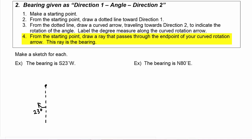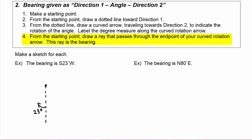Step four says from the starting point, draw a ray that passes through the end point of your curved rotation arrow. So we'll get a ray going from the starting point through the end point of our curved rotation arrow, and this ray is our bearing.